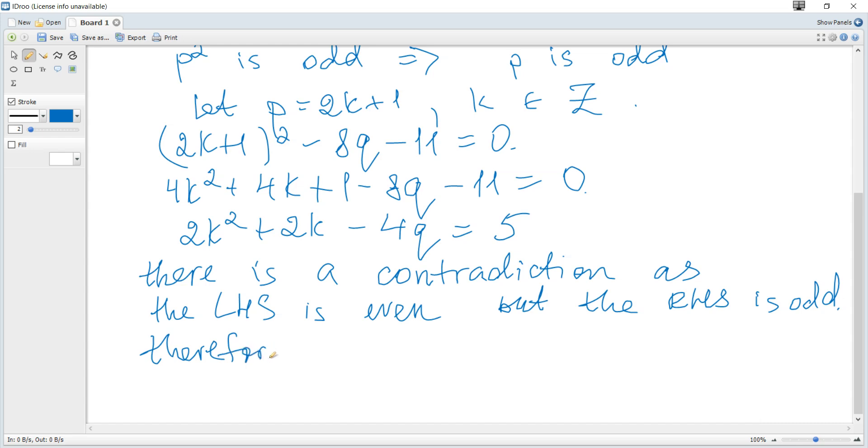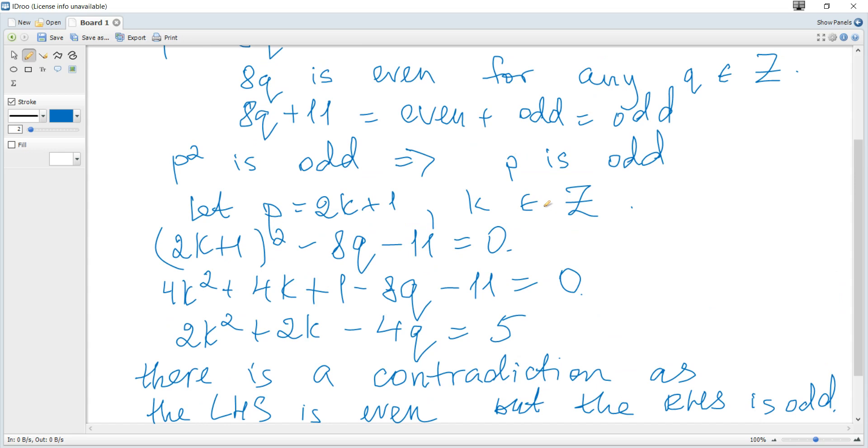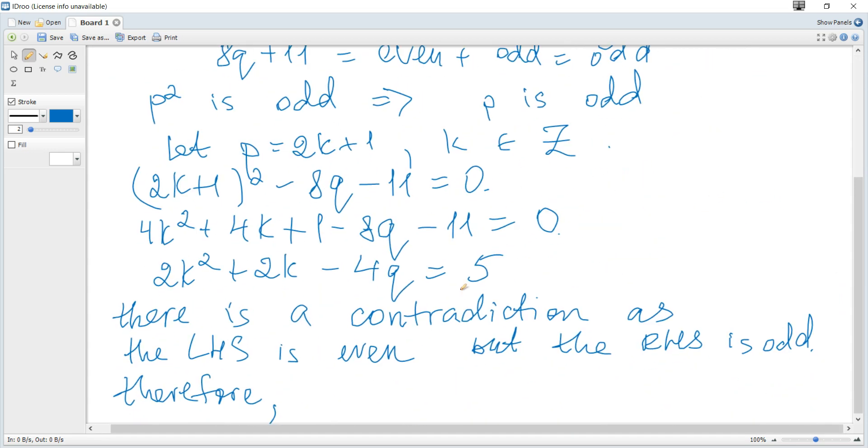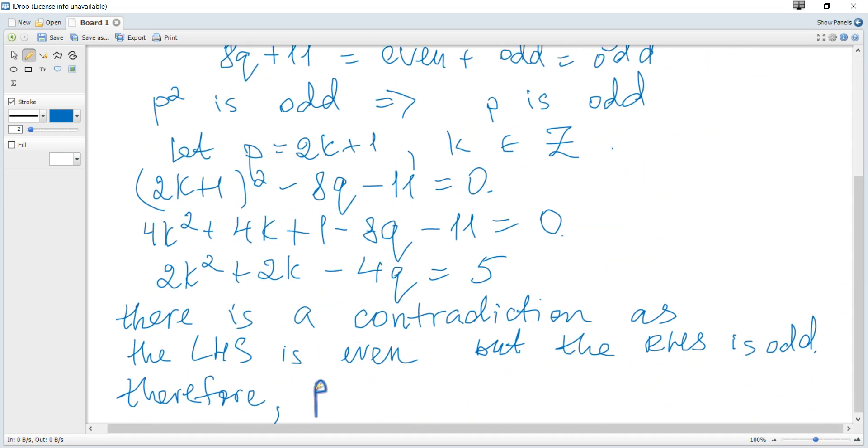Therefore, our assumption is false, so the initial statement is true. Therefore, P² - 8Q - 11 ≠ 0 for any P, Q ∈ integers. And that's all for this question.